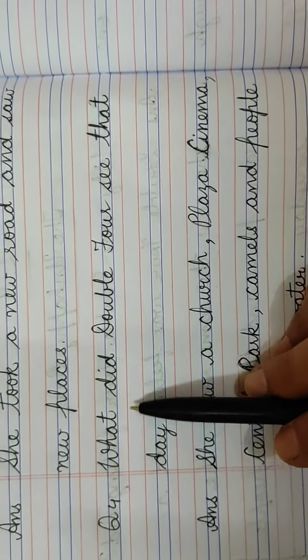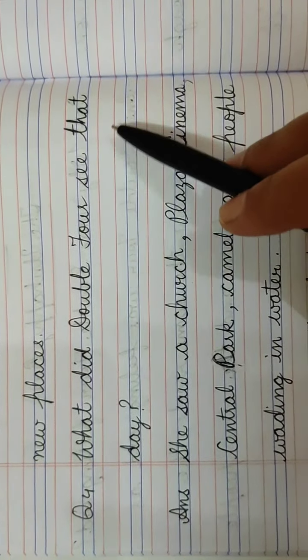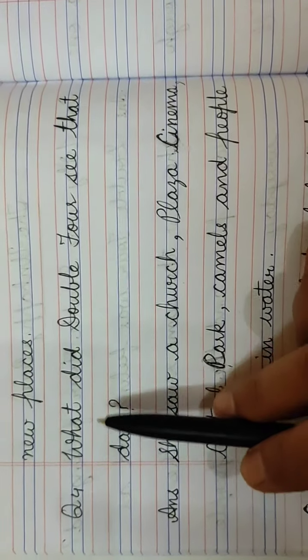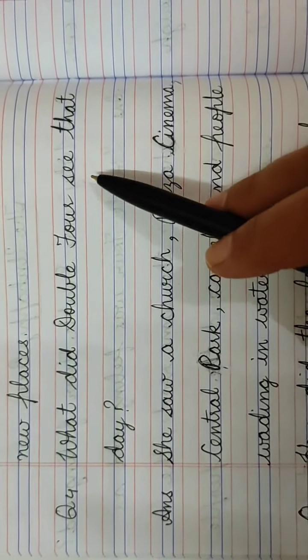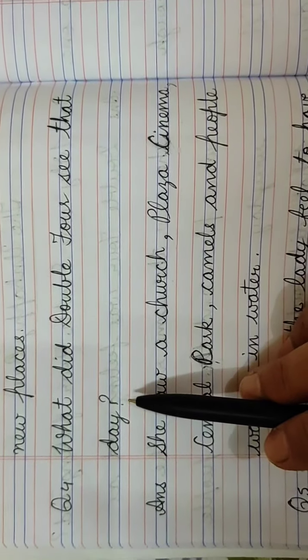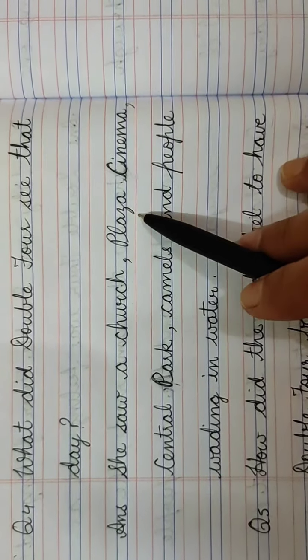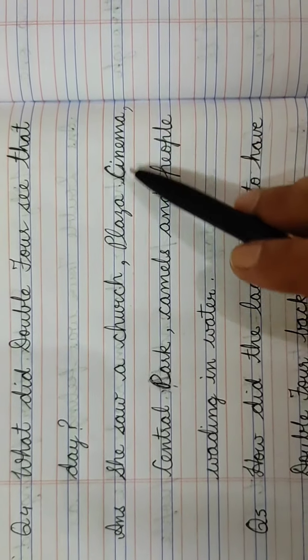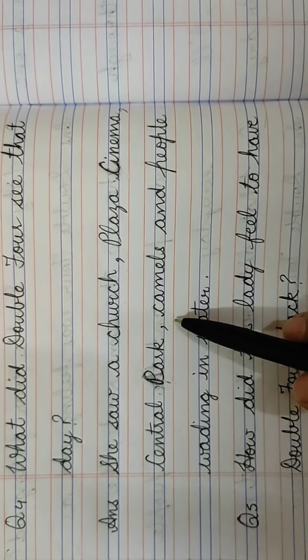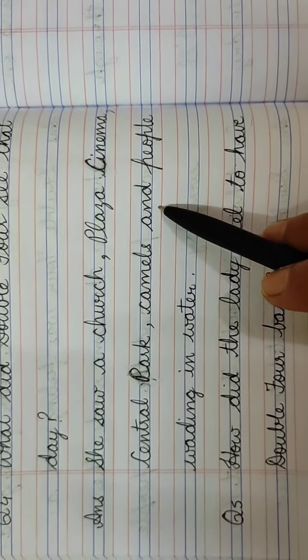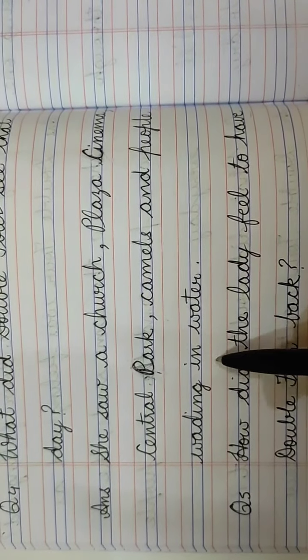Question number 4 is, what did Double 4 see that day? The answer is, she saw a church, plaza cinema, central park, camels, and people wading in water.